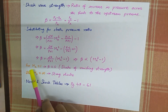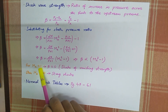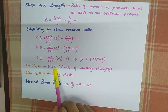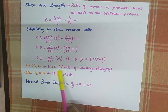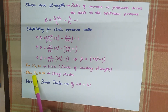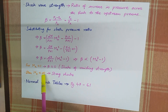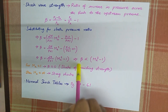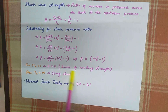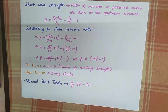If we substitute Mx approximately equal to 1, then beta is approximately equal to 0, which is called shocks of vanishing strength. When Mx approaches infinity, we have a higher value of beta, which is called strong shocks.